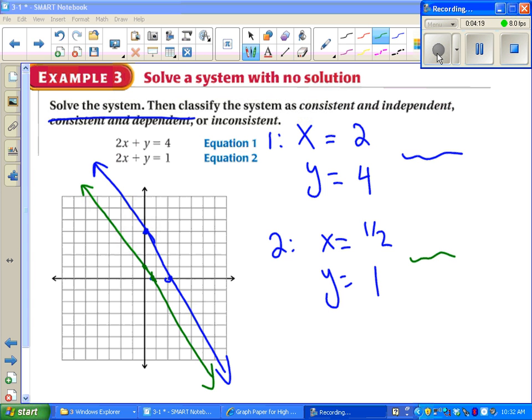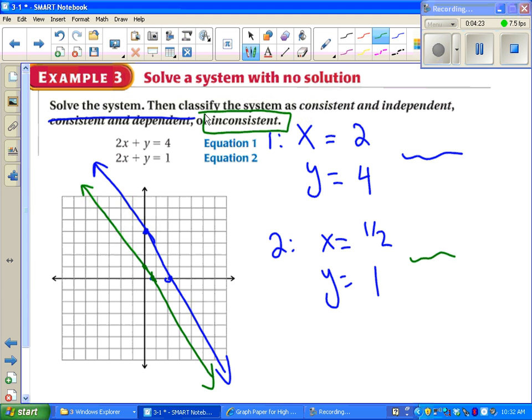These lines are parallel. They never touch. So we have no solution. That means we say inconsistent. At which point we're done.